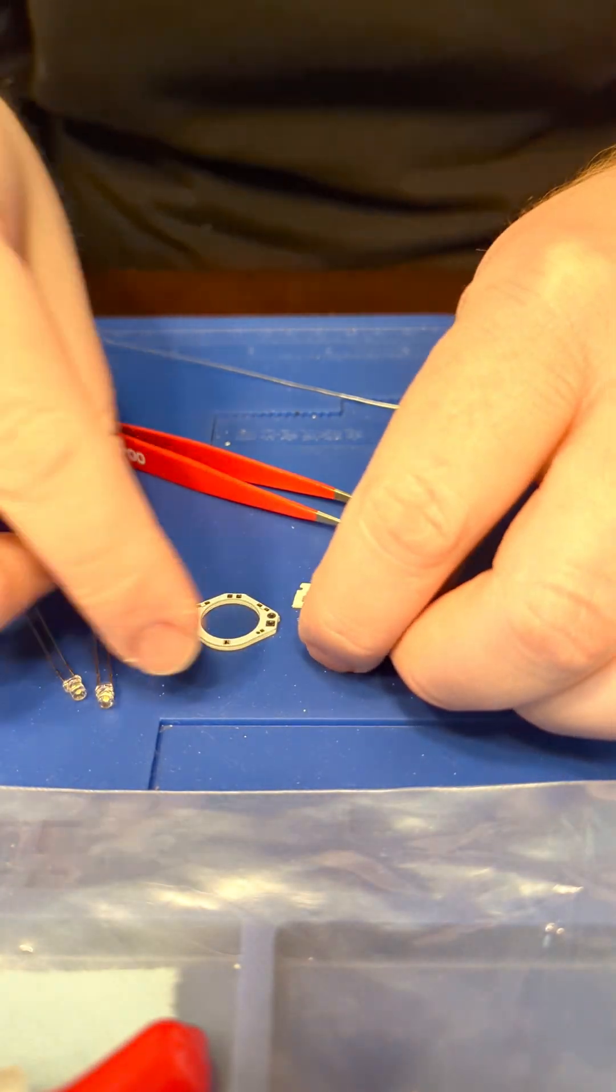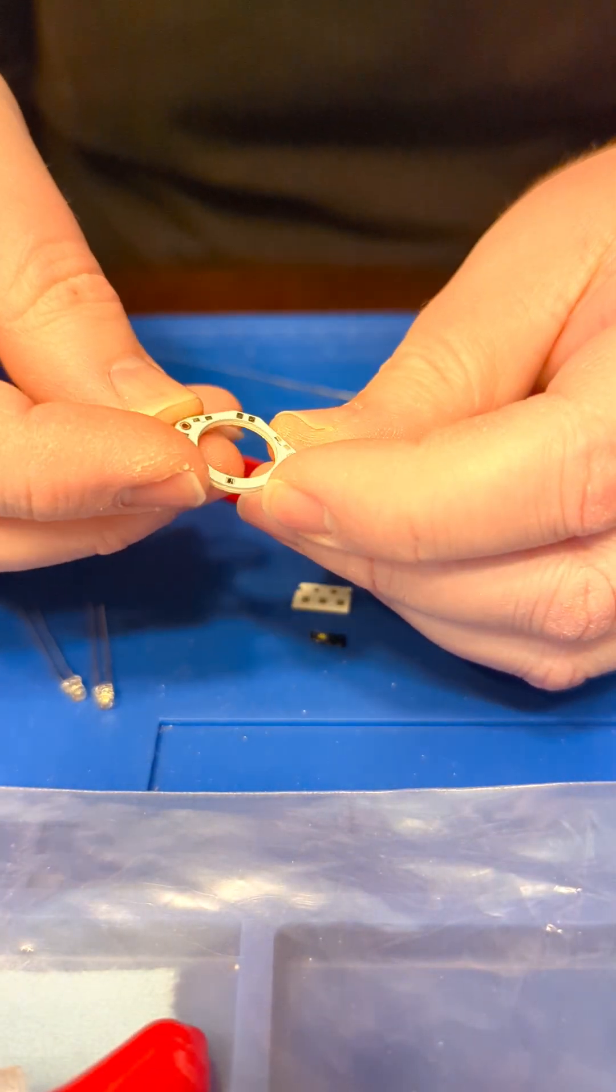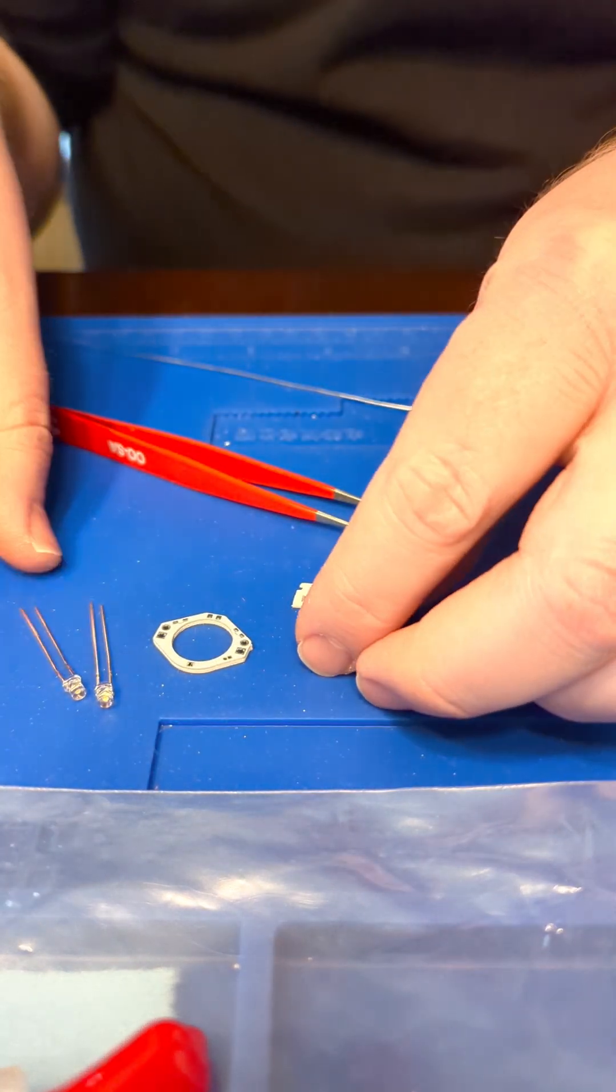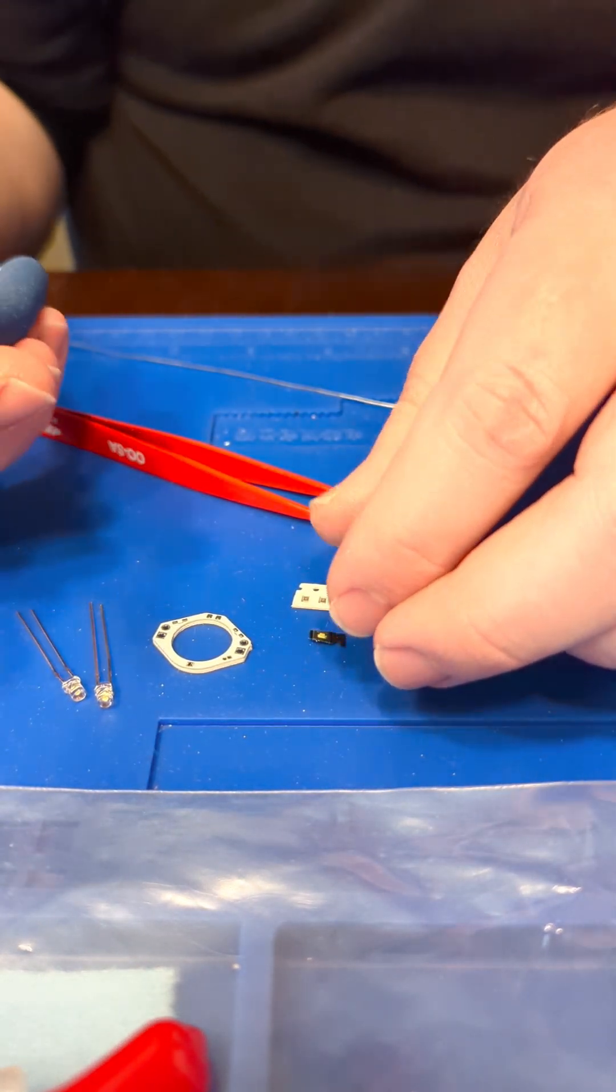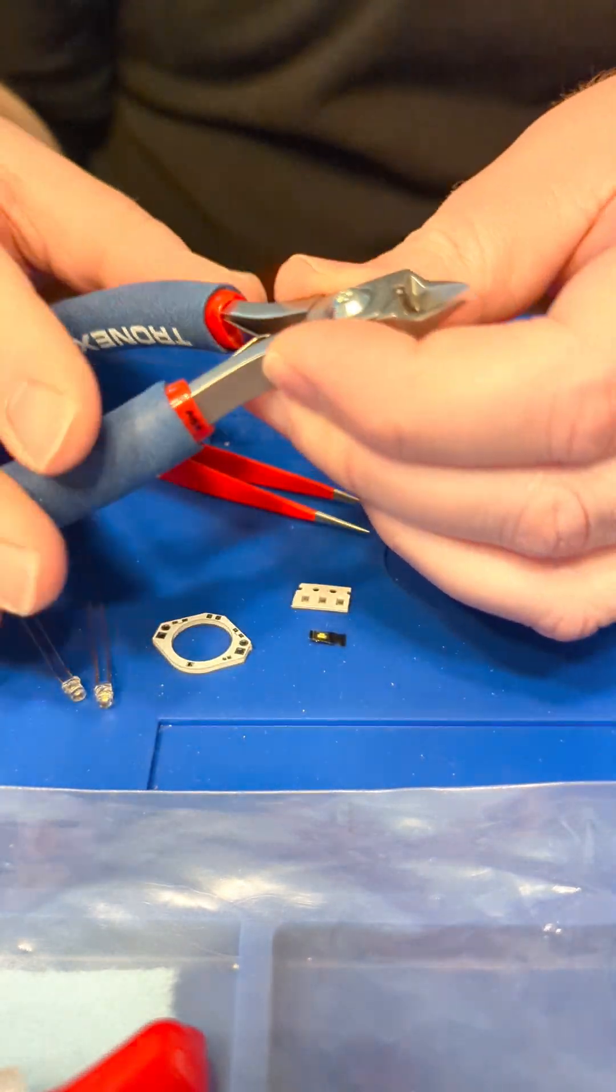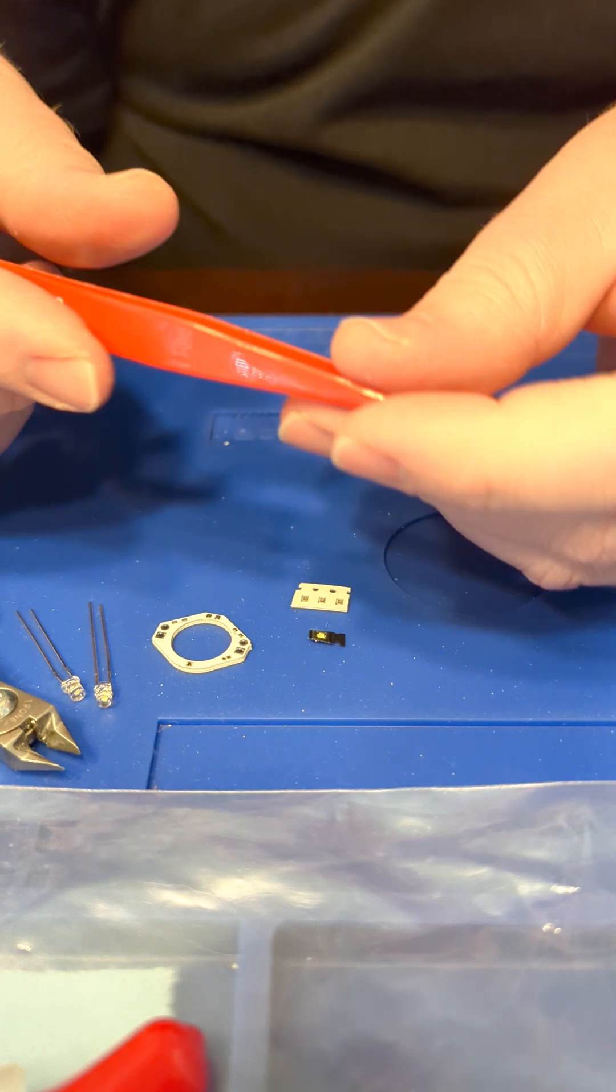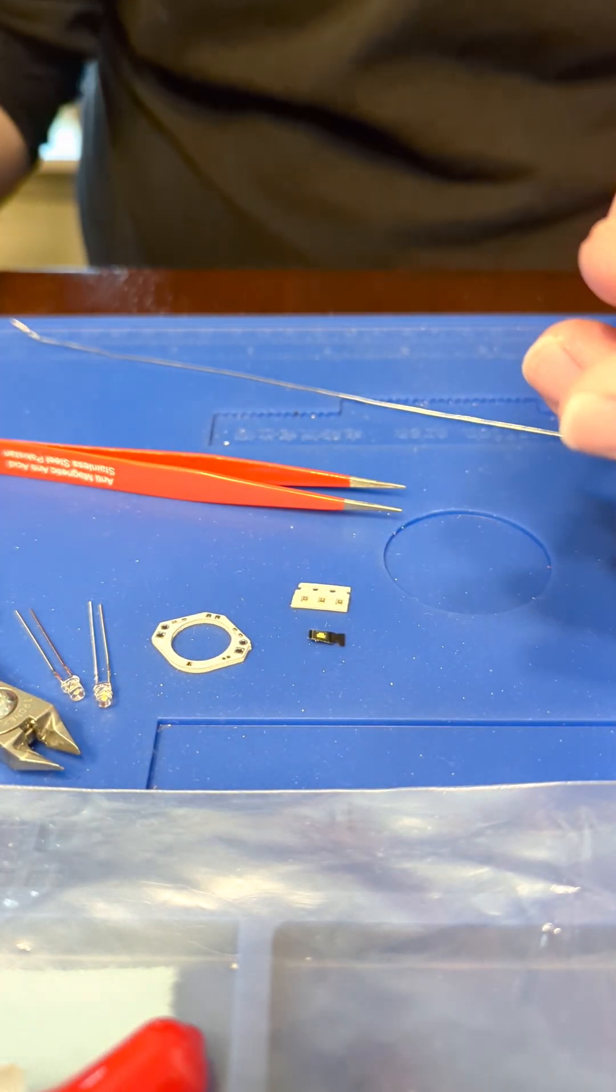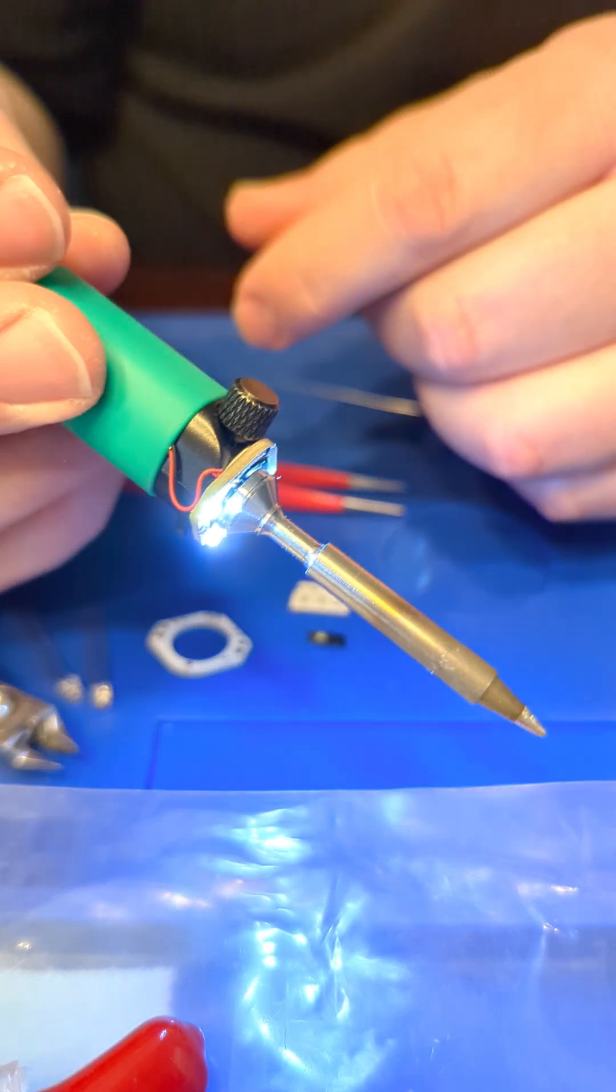I'm going to go through how to assemble all the parts onto the LED ring for the pinsel. So what you need are some cutters. I really like my Tronix cutters and then some good tweezers and then your soldering iron.